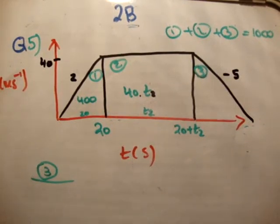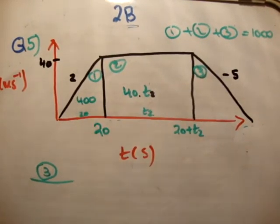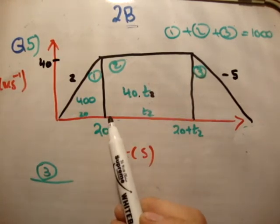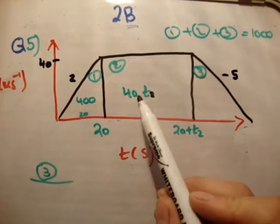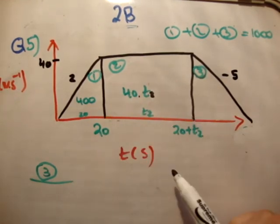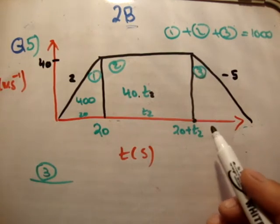Okay, so far what we know is region 1 is an area or a distance of 400 meters, and it took 20 seconds to do it, so this point here is t equals 20. Region 2, the area is 40 times t2, where this from here to here is t2. Therefore, this point here is 20 seconds plus t2.